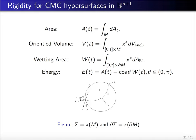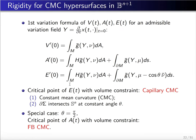Here theta is the capillary contact angle. We have the first variational formula of these quantities for an admissible variational field Y. The variation formula for volume is given by the integral of the inner product of Y dot nu. The variational formula for the area is given by the interior integration of H times Y dot nu, plus the boundary integration of Y dot mu. In fact, the variational formula for area is just the integral of the hypersurface divergence of Y.